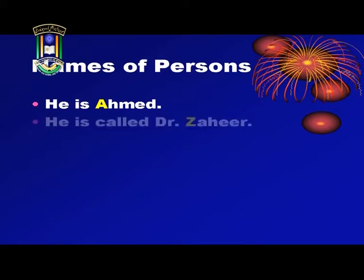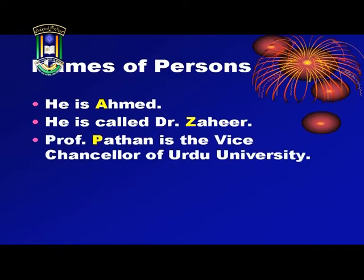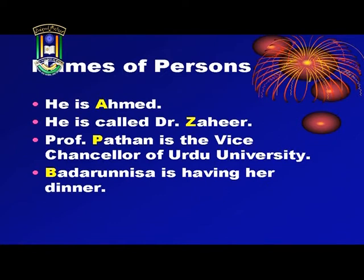We now move on to the next use of the capital letter. The names of all persons are capitalized. Look at these examples: He is Ahmad. He is called Dr. Zaheer. Professor Pathan is the Vice Chancellor of Urdu University. In each of these examples, the names of persons have been capitalized. We have capitalized Ahmad, Zaheer, Pathan, and Badr-Nisan. Ahmad is the name of a person; even though it occurs in the middle of the sentence, the letter A is capitalized. Similarly, Pathan, Zaheer, and Badr-Nisan are names of persons and therefore are capitalized. So, we use a capital letter to begin a sentence and to indicate names of persons.